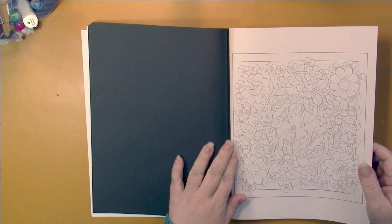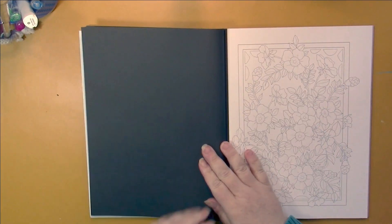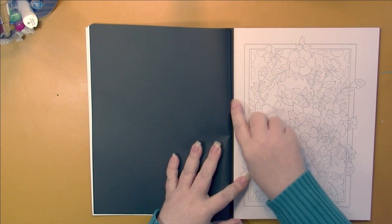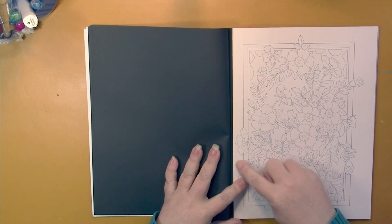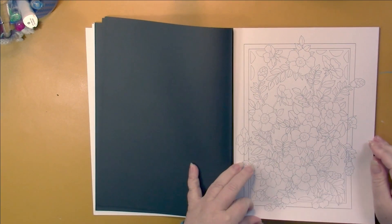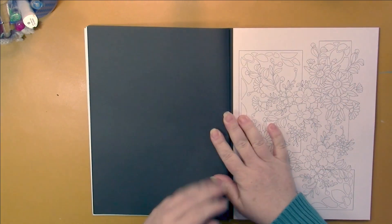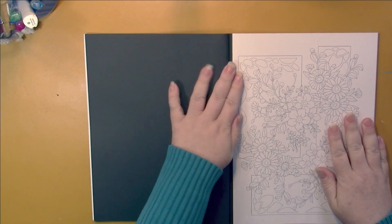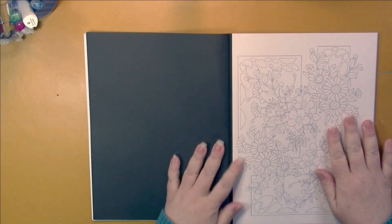Now something I've noticed with the newer books is that they have started putting this black line right here so that we're not coloring into the ditch. Now, sorry, the gutter. I've heard so many people call it a ditch that I'm not using the correct term. It's the gutter.